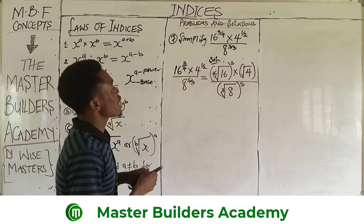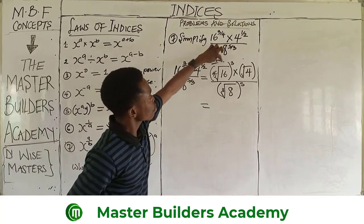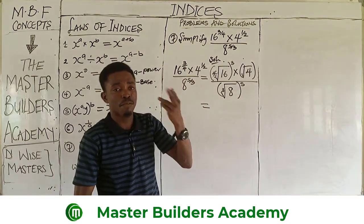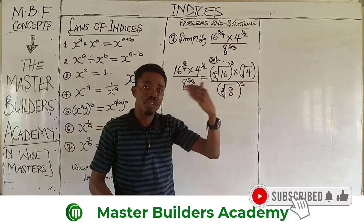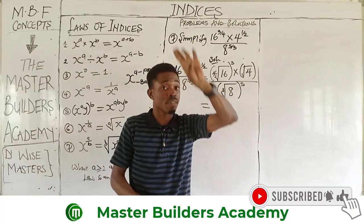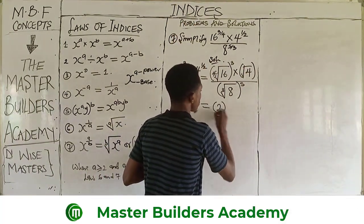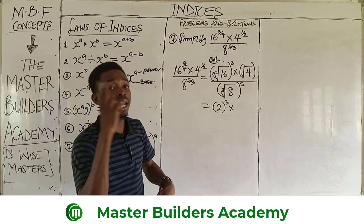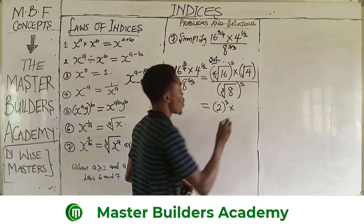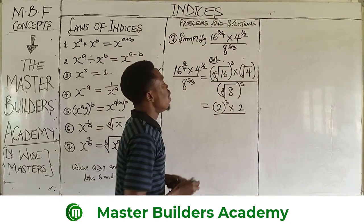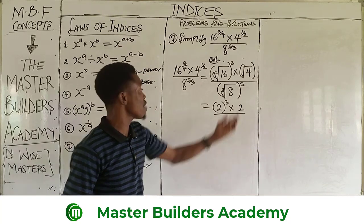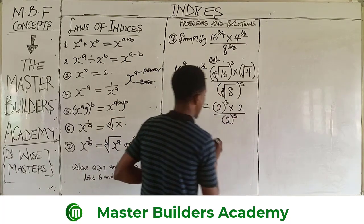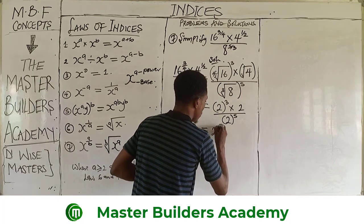The fourth root of 16 is a number that multiplies itself 4 times to give 16 — that number is 2 (2×2=4, 4×2=8, 8×2=16), so we get 2 raised to the power of 3. The square root of 4 is a number that multiplies itself 2 times to give 4, which is also 2. At the denominator, the cube root of 8 is a number that multiplies itself 3 times to give 8, which gives us 2, raised to the power of 5.